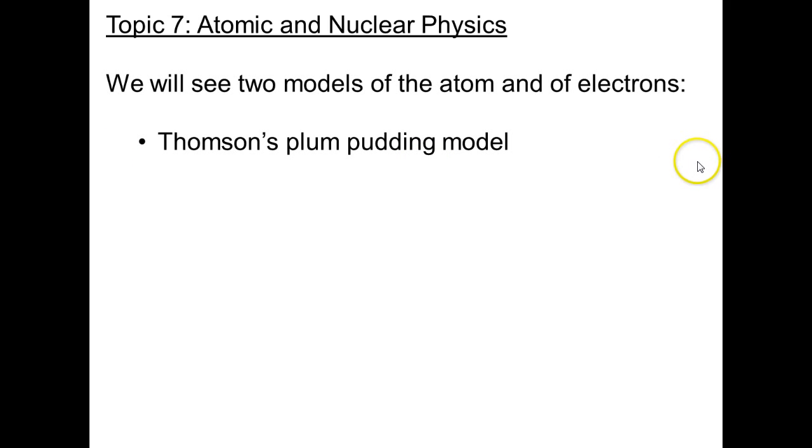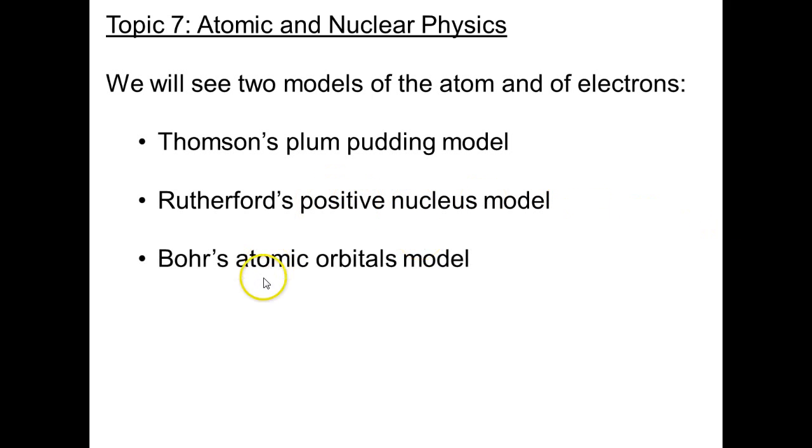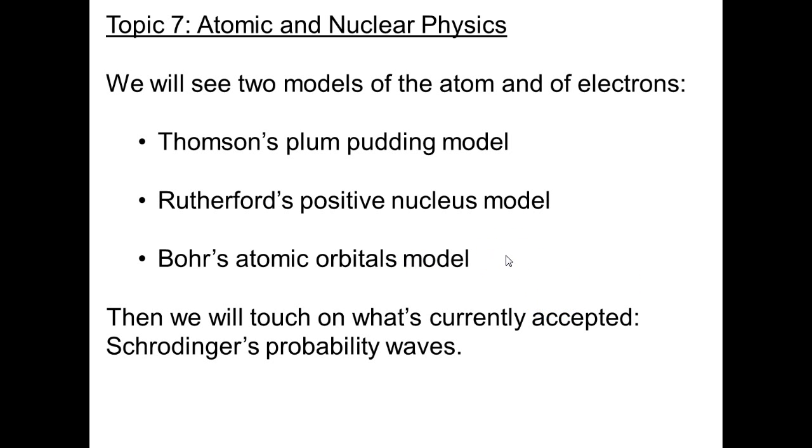In this first video, we're going to look at three models of the atom and how electrons play into the atomic model. First will be Thomson's Plum Pudding Model, then Rutherford came along with the idea that there's a positive nucleus at the center, and then we'll look at Bohr who said there are these orbitals, energy levels, which electrons can occupy. After that, we will briefly touch on what is currently accepted in physics, which is this notion of probability waves, and that is a weird idea. We'll study it in greater detail in option B, but first I want to introduce it here.